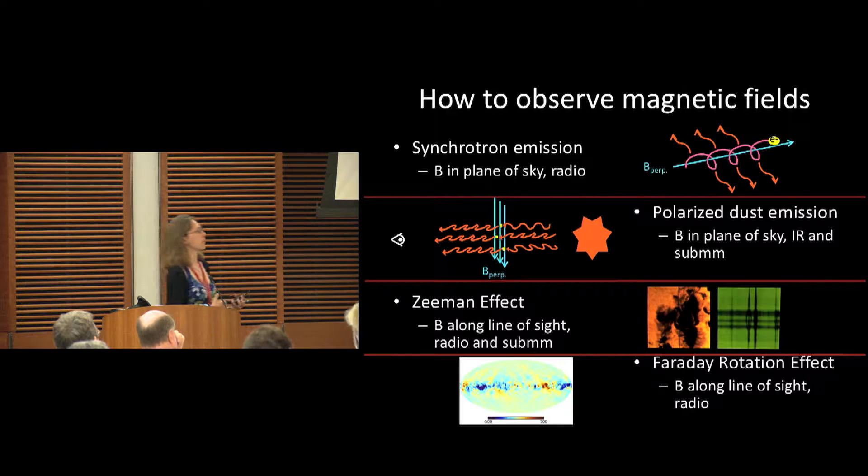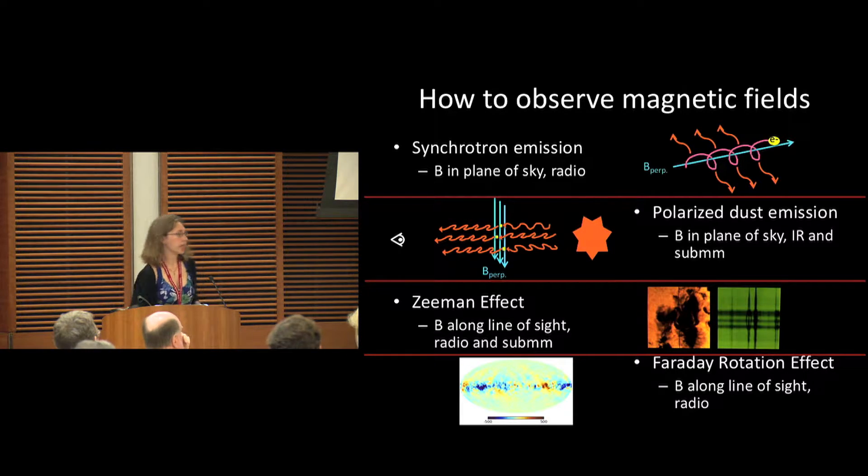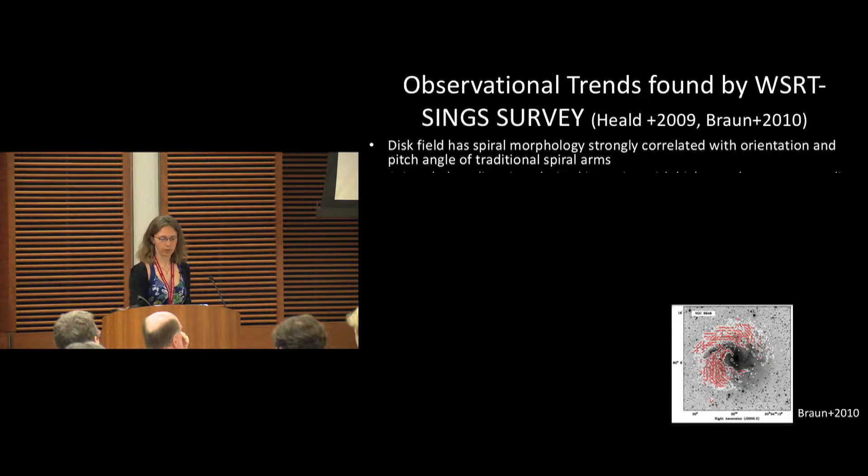If you measure the polarization angle as a function of wavelength, as that linearly polarized light passes through a magnetized medium, the polarization angle will change as a function of frequency, and that shift is due to your magnetic field strength.